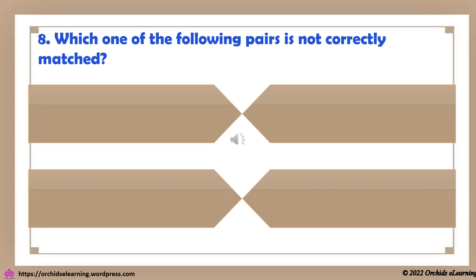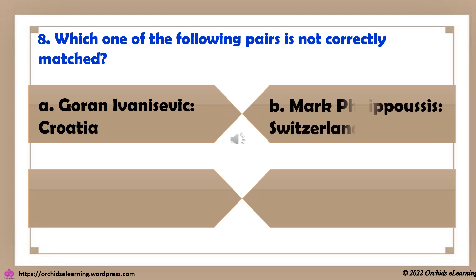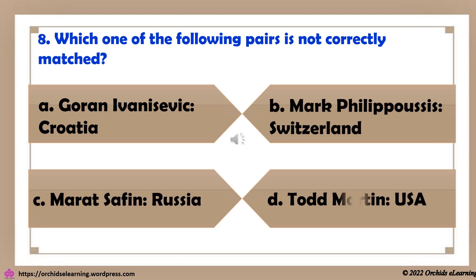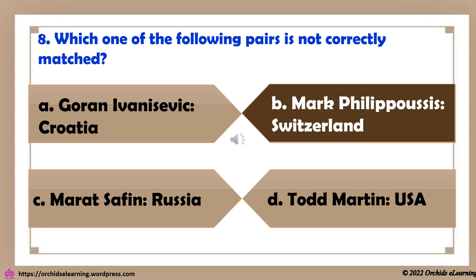Which one of the following pairs is not correctly matched? The answer is B: Mark Philipposis, Switzerland.